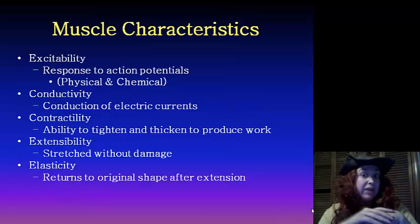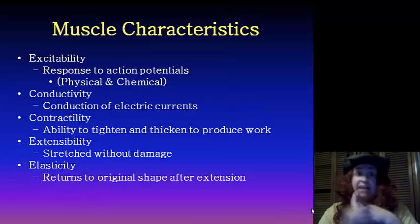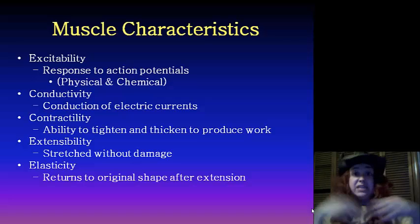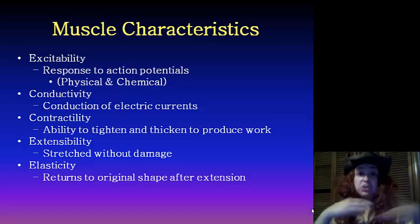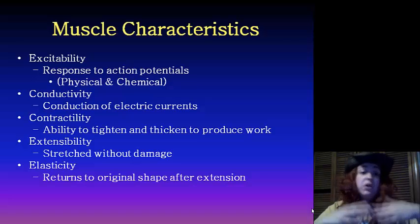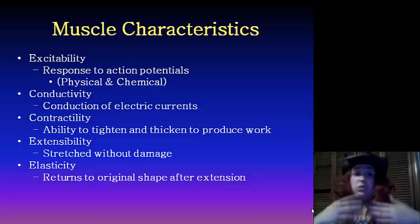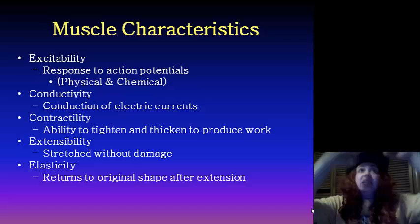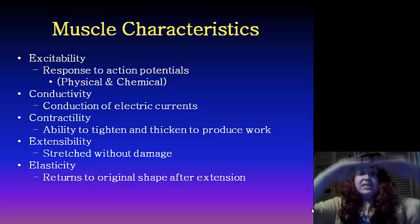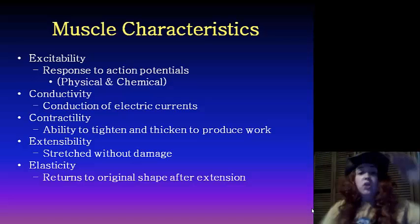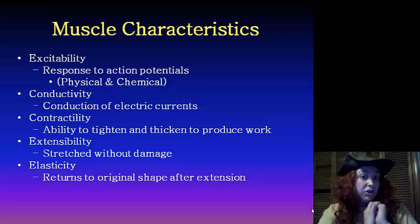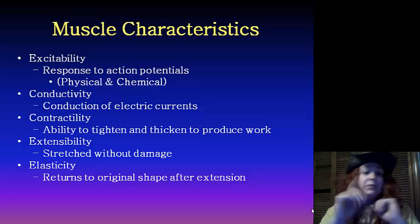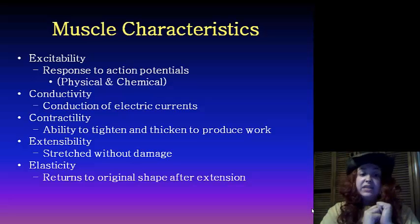Now muscle characteristics. We have excitability, which means it responds to action potential. So if some sort of stimulus — either physical or chemical — gets to the threshold, we see something occur.